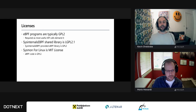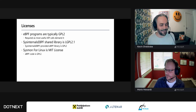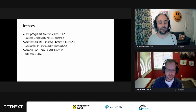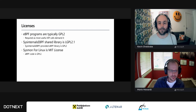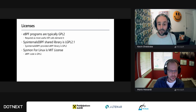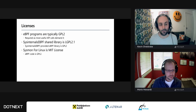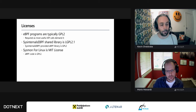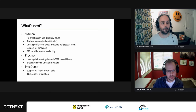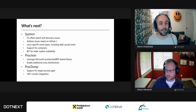On licenses: BPF programs are typically GPL2, libraries that use them are typically LGPL 2.1 because they interact with the GPL2 interface, and programs that use the library can be any license. In our case we are MIT with our BPF programs being GPL2.